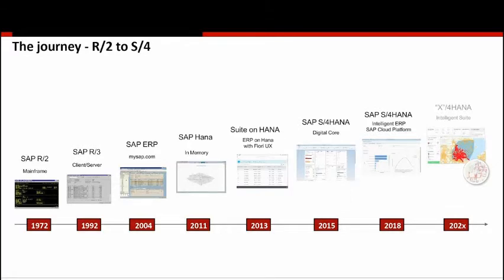Up until around 2011, everything was pretty much the same with respect to the SAP application. Then SAP HANA as a database was introduced, and SAP ECC became adaptable on HANA. Up until then ECC could run on multiple OS/DB platforms, and in 2013 it was possible to run ECC on HANA. With a particular EHP level, certain transactions could be accessed using Fiori, providing a very rich user experience that early SAP users were not used to.